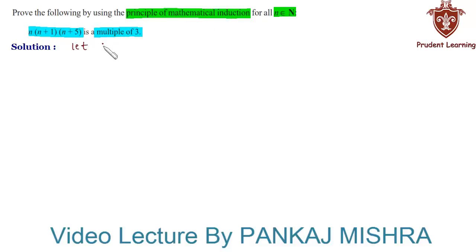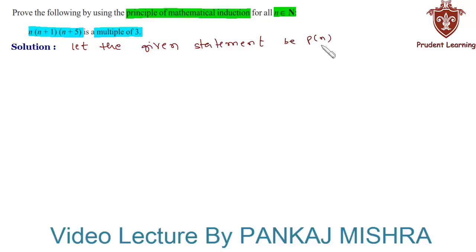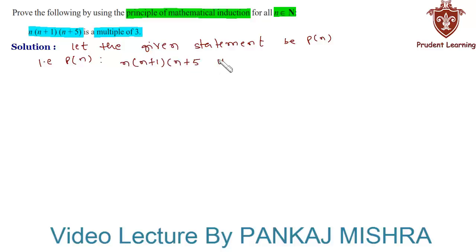Let the given statement be P(n), that is, P(n) such that n times (n+1) times (n+5) is a multiple of 3. Now for n equal to 1, we will check whether the given statement is true or not.